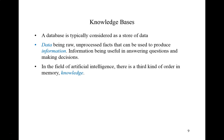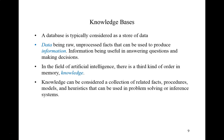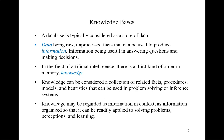A database is typically considered as a store of data. Data would be raw, unprocessed facts that can be used to produce information. Information is something useful in answering questions and making decisions. In the field of artificial intelligence, there is a third kind of order — we call it knowledge. Knowledge can be considered a collection of related facts, procedures, models, and heuristics that can be used in problem solving or inference systems. Knowledge may be regarded as information in context — information organized so that it can be readily applied to solving problems, perceptions, and learning.